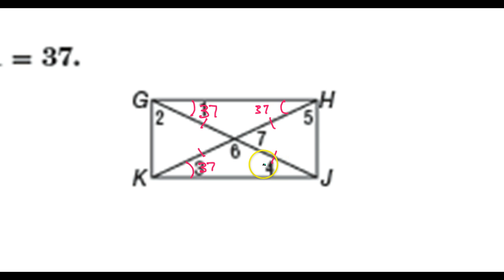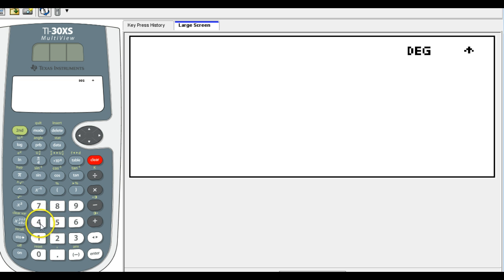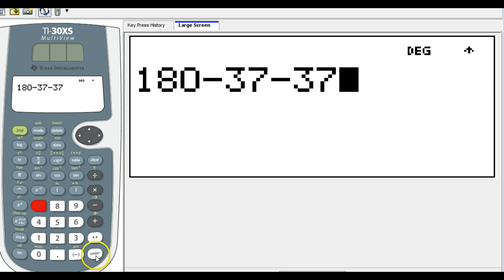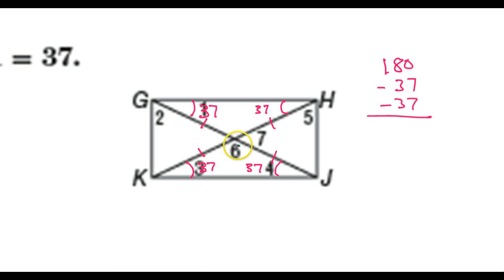Again, isosceles triangles here, so these two angles will also be congruent. So that's going to be 37. So I have all four of these angles now. Now, I can also get angle 6 because the sum of the angles in a triangle have to be 180. So I'm looking at this triangle right here, the triangle with the 3, the 6, and the 4 in it. So if I go 180 minus 37 minus 37, that leaves 106. So angle 6 up here has to be 106.